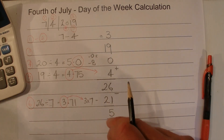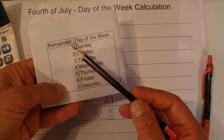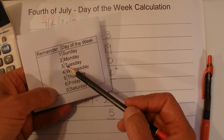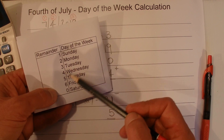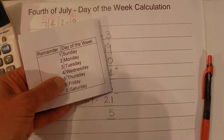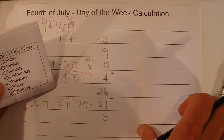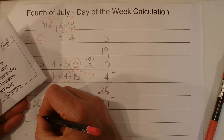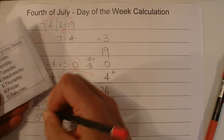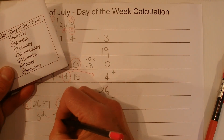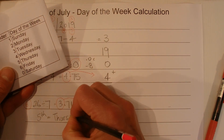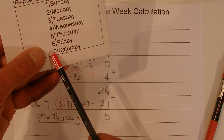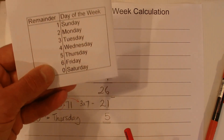That 5 is our final number. We use a lookup table: if the remainder is 1 it's Sunday, 2 is Monday, 3 is Tuesday — and since it's 5, that's Thursday. So July the 4th 2019 falls on a Thursday. One other note about the table: if you end up with zero, then zero is Saturday.